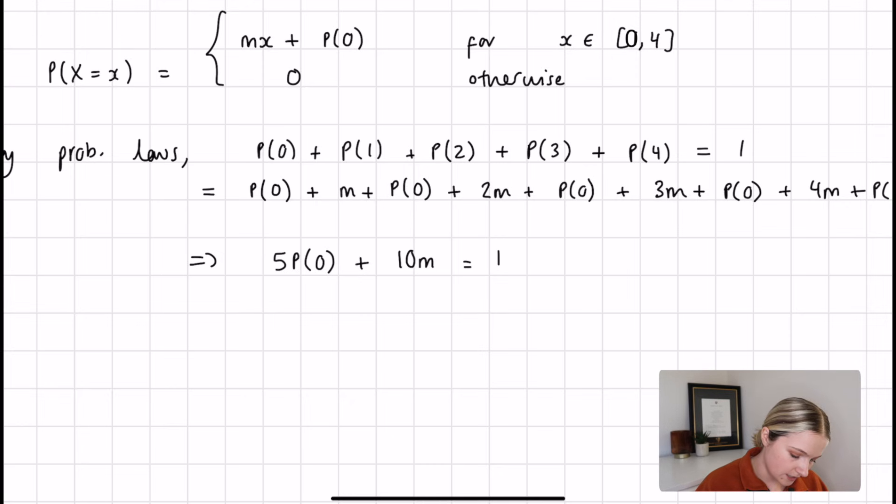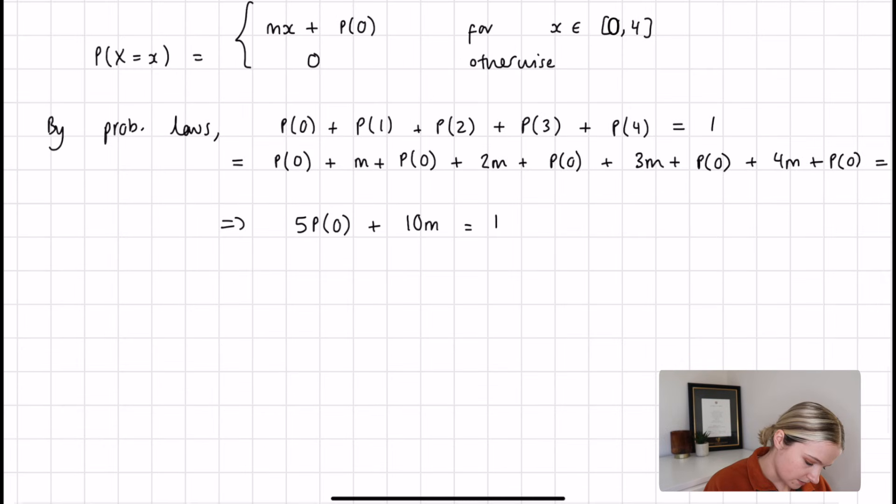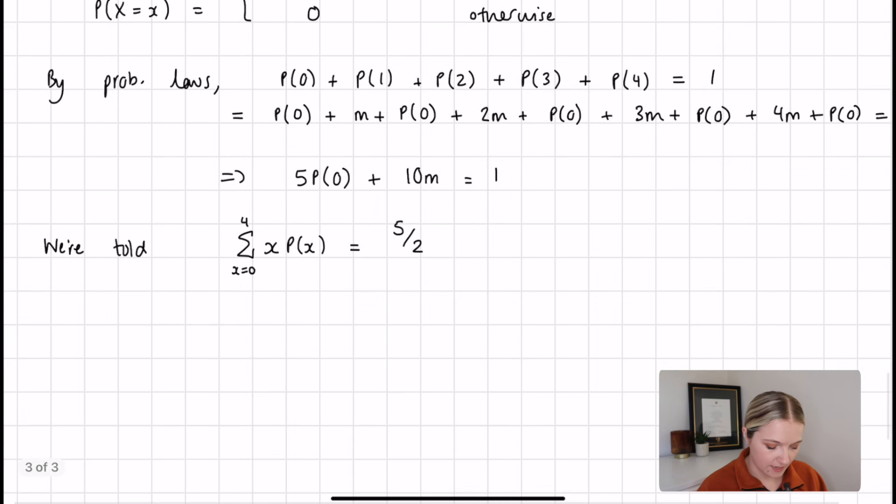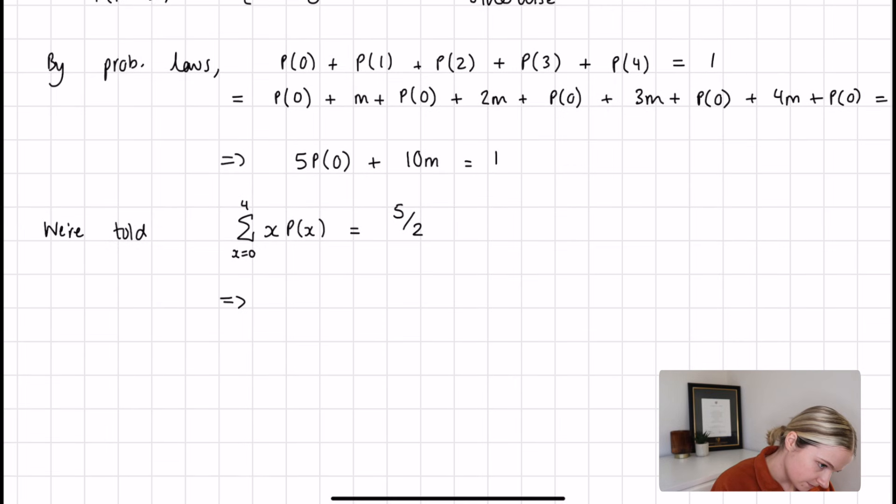The next thing that we're told in the question is that the mean of X is 5 over 2. The mean of X is given by the summation of x times P(x) from x equals 0 to 4, and we're told that equals 5 over 2. We can do a very similar thing to what we did before. Substitute in each of the values for x equals 0 to 4, and when you do that what you find is 30m plus 10P(0) equals 5 over 2. So we have this new formula. We have this one here and this one here. They're both in terms of P(0) and m, so we can basically take these two simultaneous equations and figure out what m equals and what P equals.